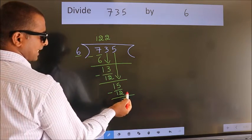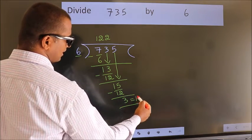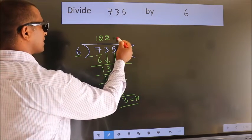No more numbers to bring down. So we stop here. This is our remainder. This is our quotient.